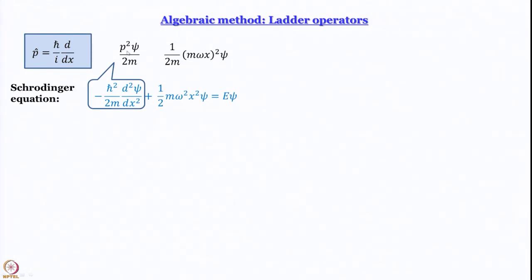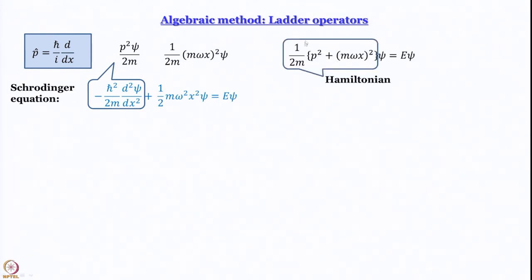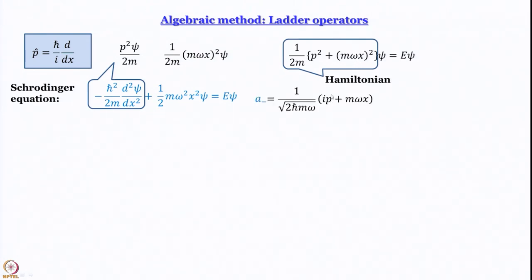Since there is a 1/2m in the kinetic energy term, we take 1/2m common from the second term as well, so that you get the square of mωx operating on ψ. The Schrödinger equation becomes: 1/2m times (p² + (mωx)²) operating on ψ equals Eψ. This is the Hamiltonian. What we have done is rewritten the Hamiltonian in terms of the linear momentum operator, and this Hamiltonian is of the form u² + v².